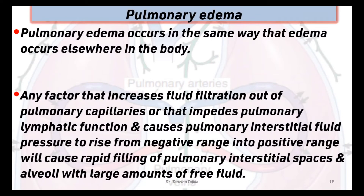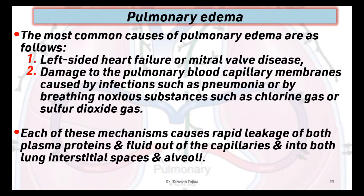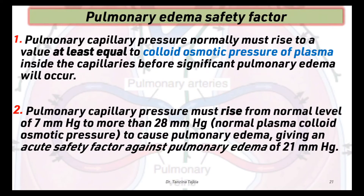Pulmonary edema occurs the same way that edema occurs elsewhere in the body. Any factor that increases fluid filtration out of pulmonary capillaries or that impedes pulmonary lymphatic function causes pulmonary interstitial fluid pressure to rise from a negative range into a positive range, causing rapid filling of pulmonary interstitial space and alveoli with large amounts of free fluid. The most common causes are left-sided heart failure, mitral valve disease, or damage to pulmonary blood capillary membranes caused by infections such as pneumonia, or breathing noxious substances such as chlorine gas or sulfur dioxide, causing rapid leakage of both plasma protein and fluid into lung interstitial space and alveoli.